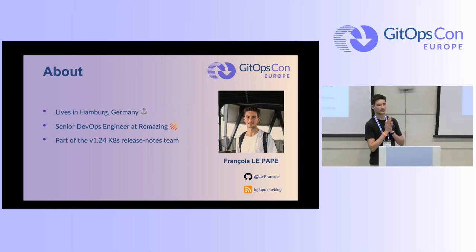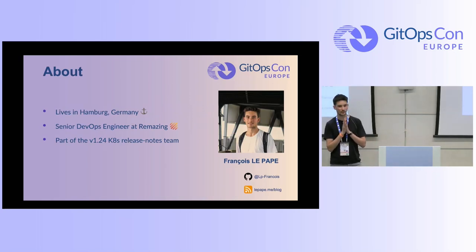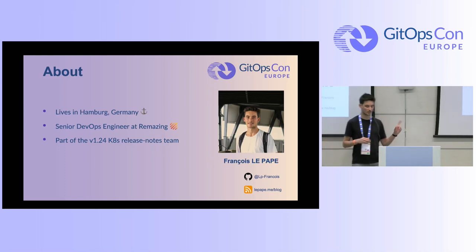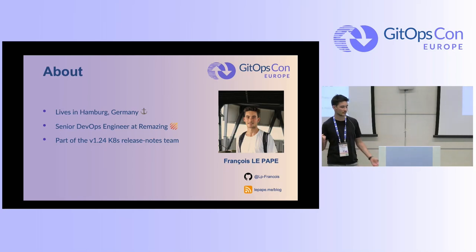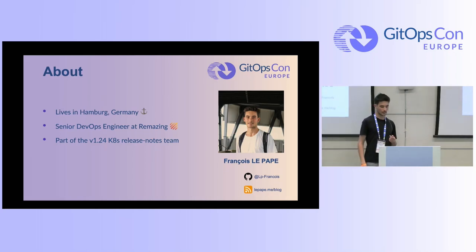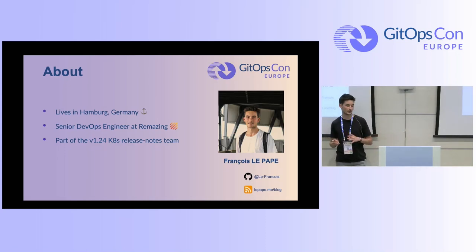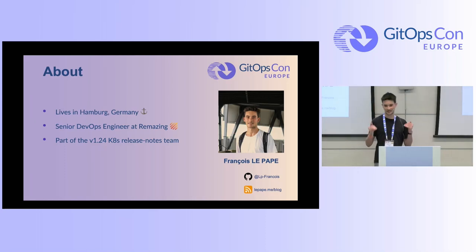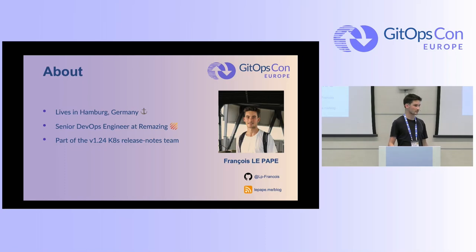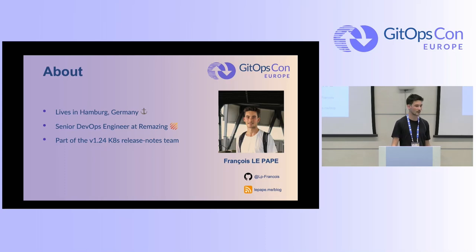First, about me. As my accent can show, I'm French, but I work in Hamburg, Germany — weather maybe a bit different from Spain for those who've visited. I'm a DevOps engineer at Remazing, a mid-sized company with a very small tech team of roughly 10 persons. On my free time I like open source, so I joined the SIG release team of Kubernetes for the last release. For the summer I'll pause open source and maybe come back in the winter.